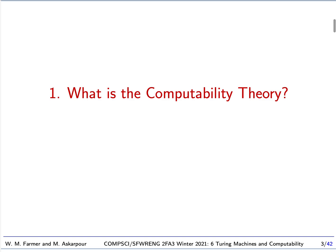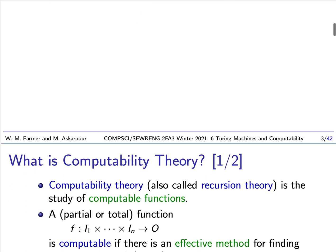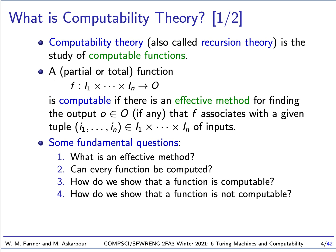So the first question is: what is computability theory? Computability theory is an important component of computer science. We can define it quite simply: computability theory is the study of computable functions. Another name for computability theory is recursion theory. A function is computable if there's an effective method for finding the output that the function associates with an input or set of inputs.